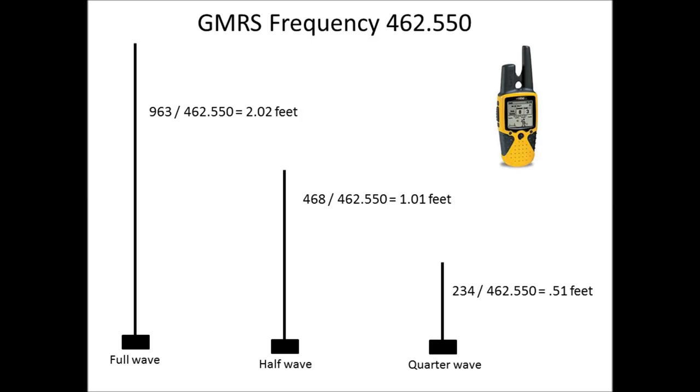But unlike FRS radios, in the GMRS service, you can have an external antenna provided you have a radio that gives you a connector for it. And if you were to make your own antenna for GMRS, the full wave formula 963 divided by the frequency, your antenna would be two feet long. And if that was too long for your application, and you wanted a shorter antenna, you could go to a half wavelength, and use the 468 divided by frequency formula, and that would give you a one-foot antenna. And if that antenna was too long for your operational requirements, and you wanted something shorter, but still resonant, still efficient, you could use 234 divided by frequency, and have a quarter-wave antenna, and that would be just a little over a half a foot long.